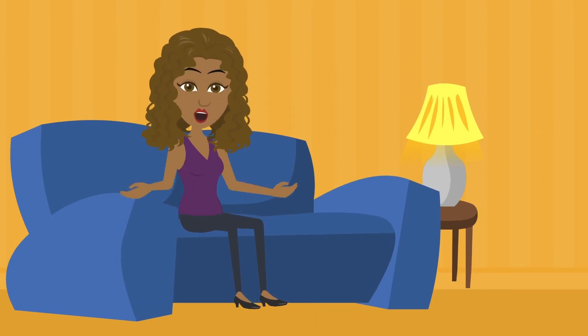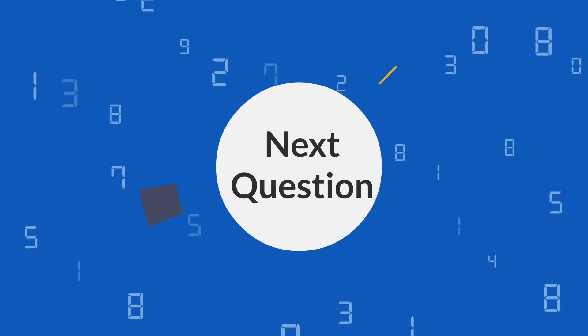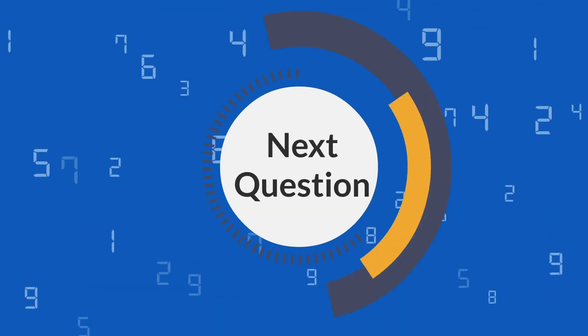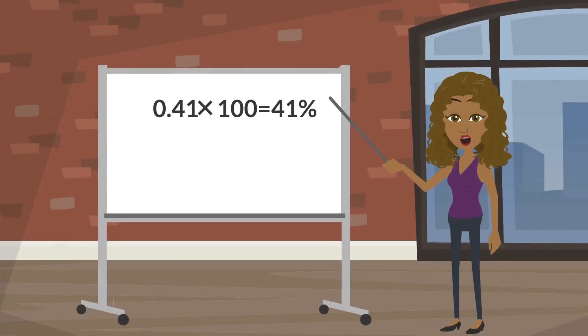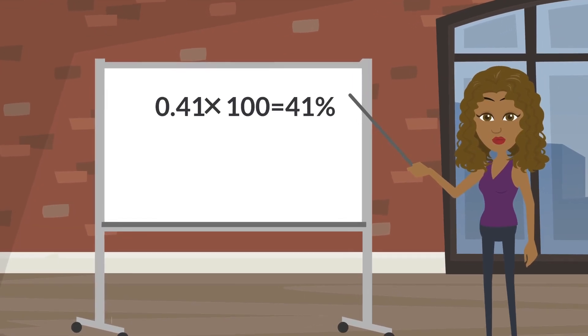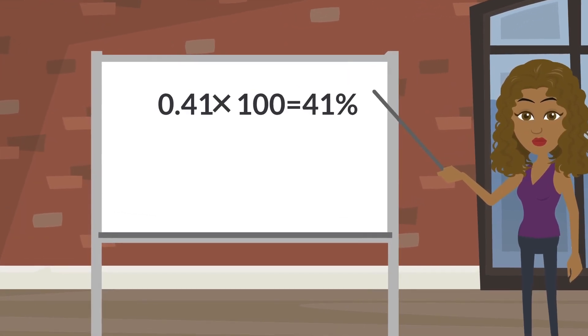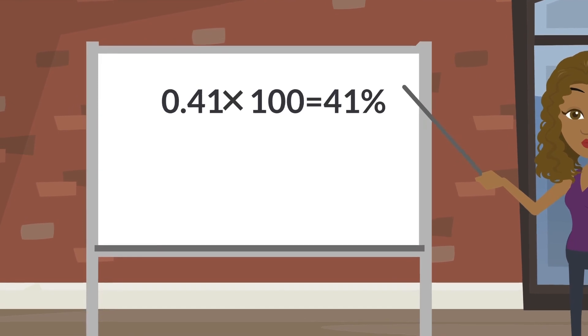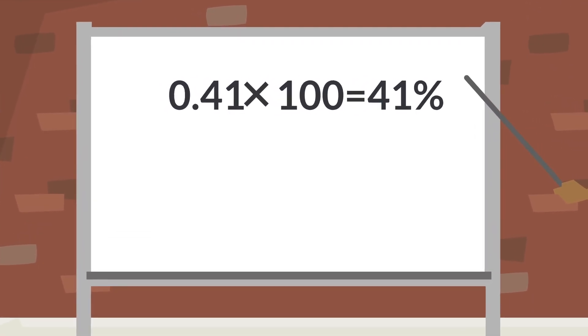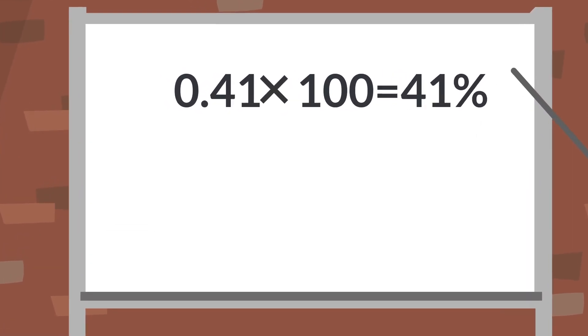Next question: 0.41. What place is the four in? You're right, tenth place. What place is the one in? Hundredth place, correct. So now we're going to times that by 100 and we get 41 percent.